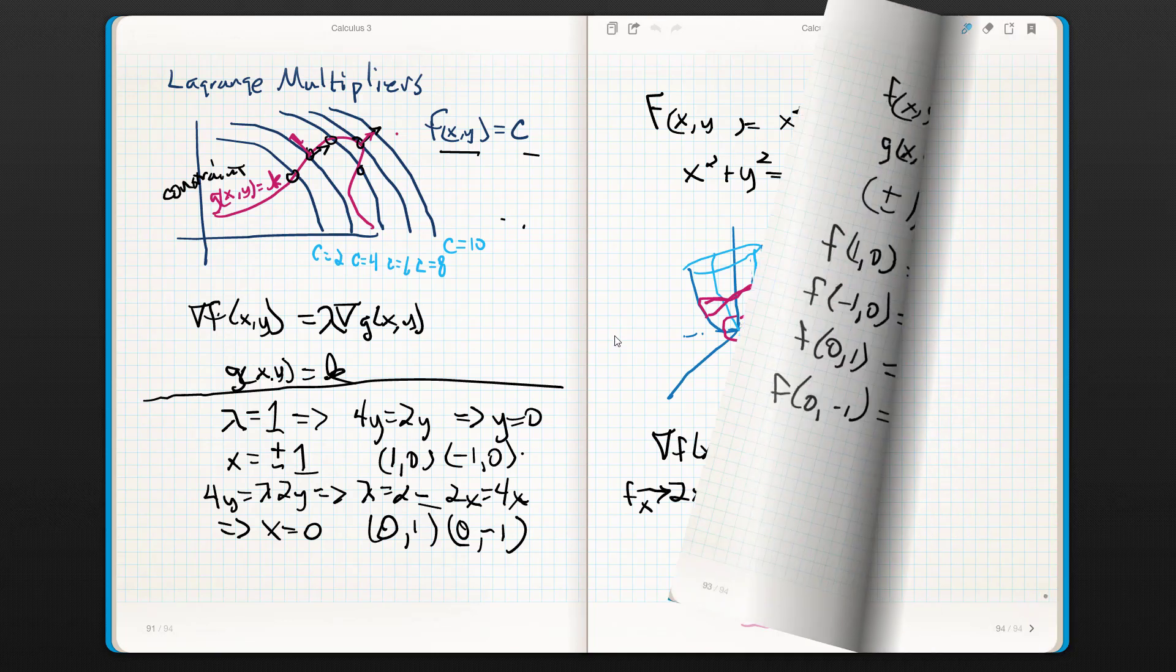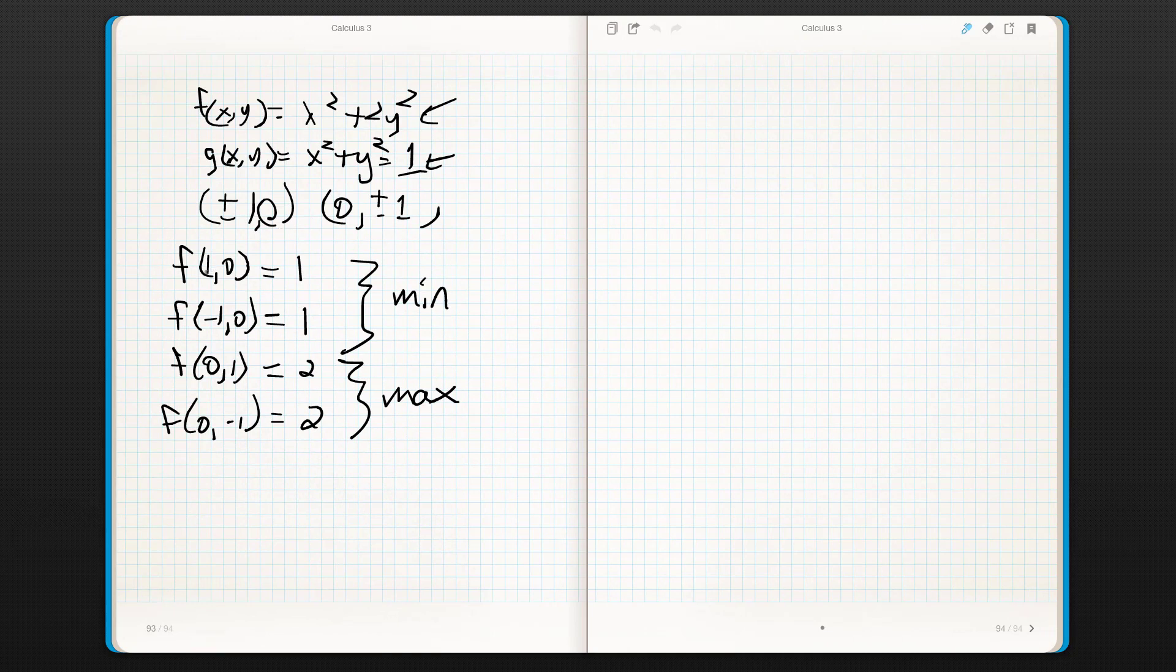Now, apparently, those points happen at 1, 0, 1, negative 1, 0, 1, 0, 1, 2, and 0, negative 1, 2.